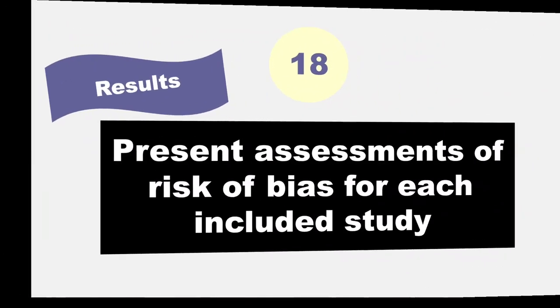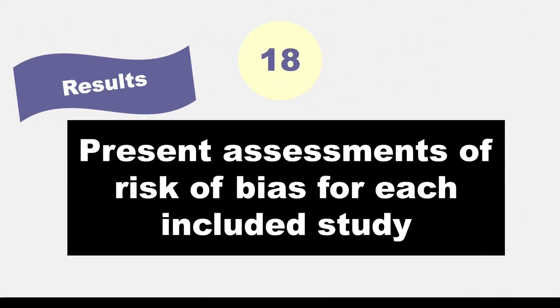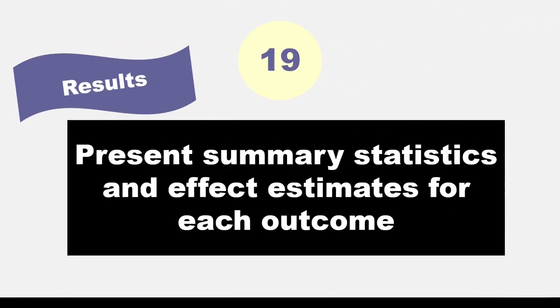In item 18, you will need to present assessments of risk of bias for each included study. In item 19, authors are asked to, for each outcome and for each study, present a summary statistics table and an effect estimate and its precision, such as a confidence interval.